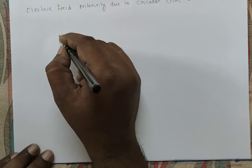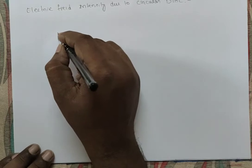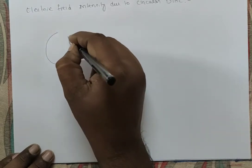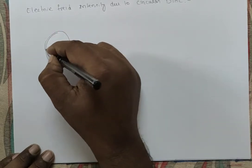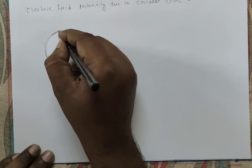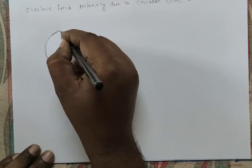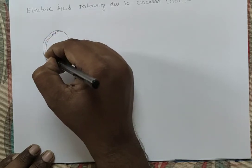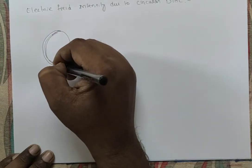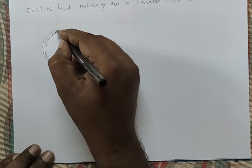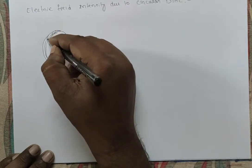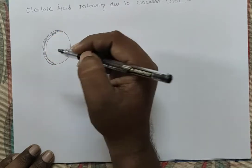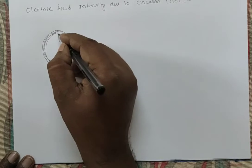For a circular disc, the complete surface is charged — unlike the previous cases which were linear. This is a surface charge, so it has a surface charge density sigma.